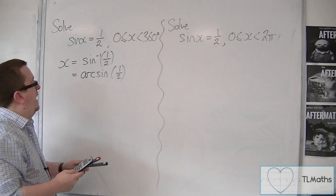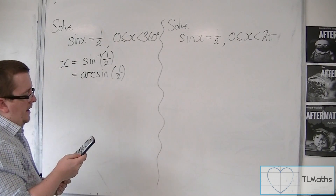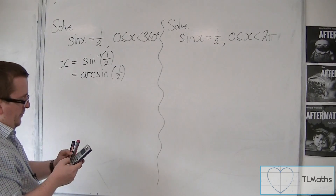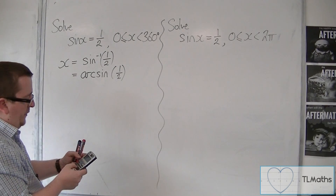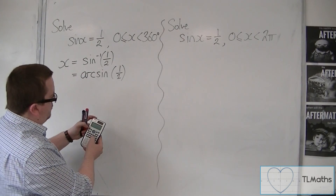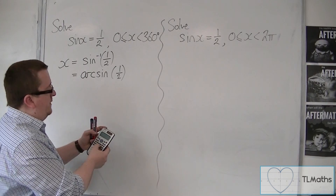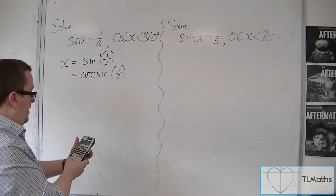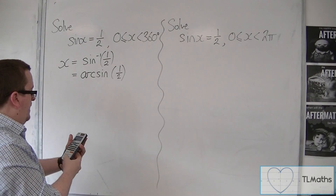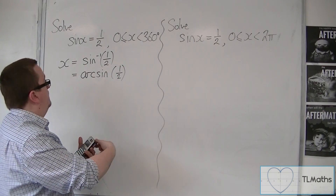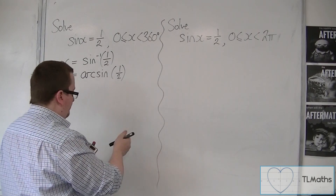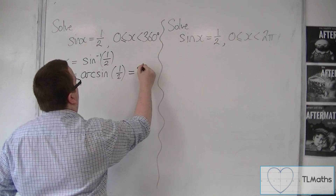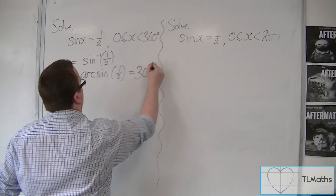So arc sine in degrees — we're going to do inverse sine. On your calculator, you need to press shift, then sine, then one half, and you should get 30. So this is 30 degrees.